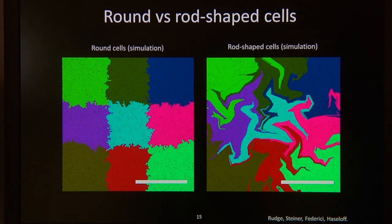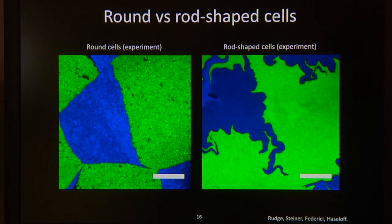If we do a simulation where we change the shape of the cells so they're now round instead of rod-shaped, we obtain quite different boundaries between the cell colonies, you can see here. And it turns out that these predictions can actually be borne out by experiments.